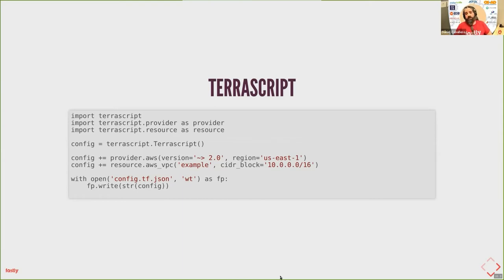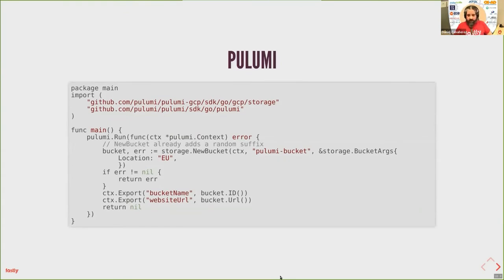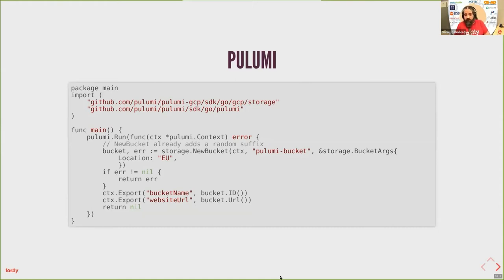Pulumi is a relatively new player. In concept it's similar to CDK and Troposphere, but it's also multi-language and multi-provider. It doesn't mean a single recipe deploys to multiple providers, but as with Terraform, you can use the same framework to orchestrate deployments across clouds or port an existing deployment from one provider to another. The API looks very similar to Terraform — the functions have the same parameters as the Terraform provider, but you consume them from code in your favorite programming language.